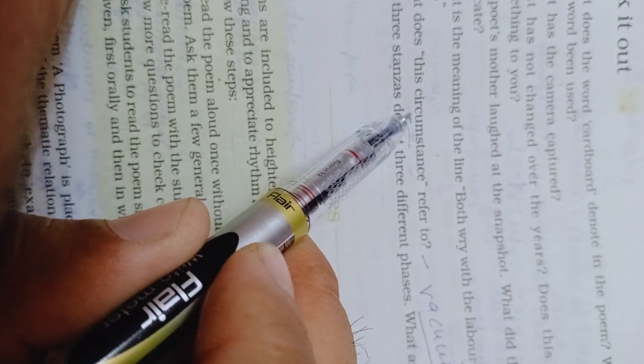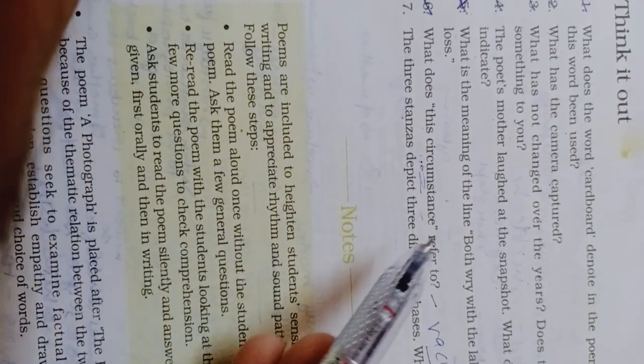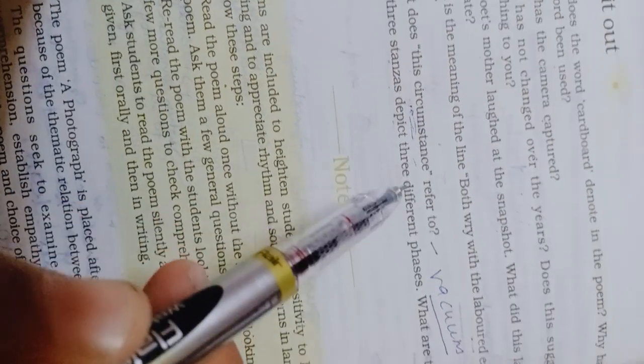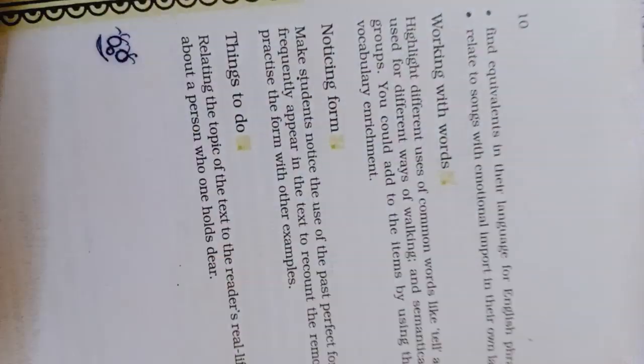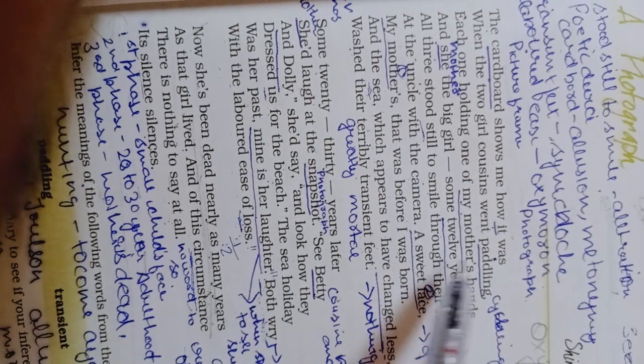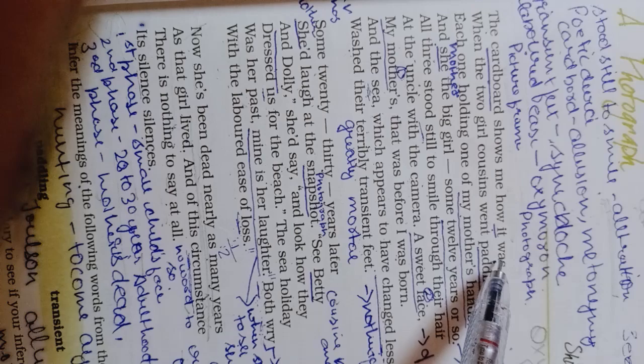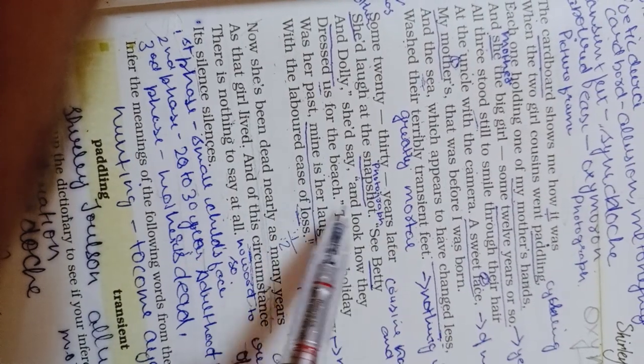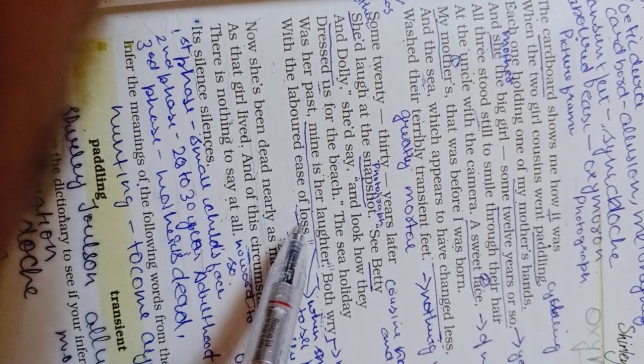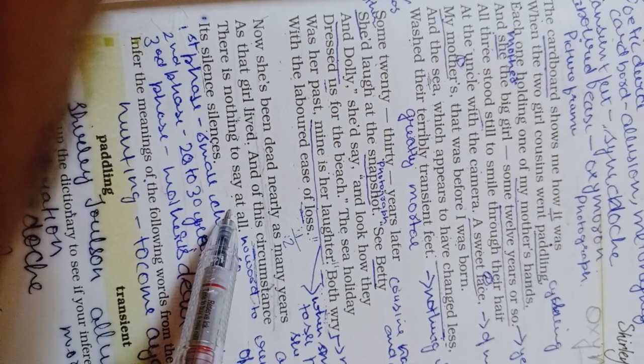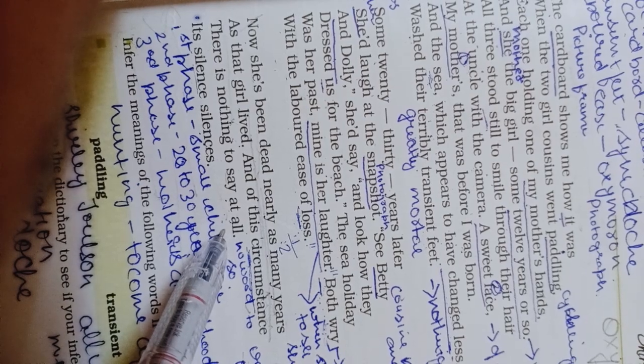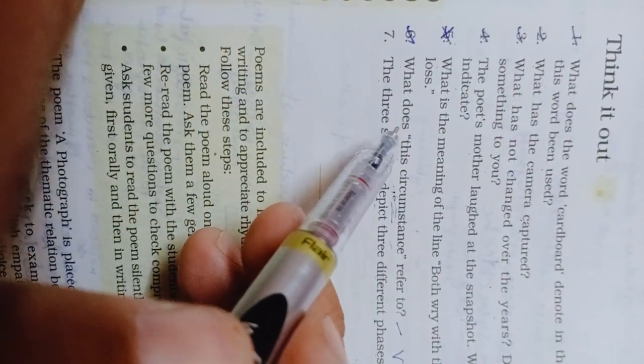Next question: The three stanzas depict three different phases. What are they? See, this first stanza depicts the happy moment of poet's mother at sea beach when she was a child. Second stanza talks about the loss of mother. And third stanza depicts the present situation of the poet when there is nothing to speak and the poet becomes sad or emotional. Dear students, so these are the seven questions.